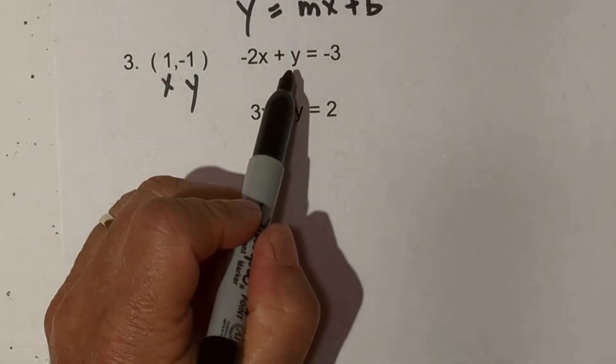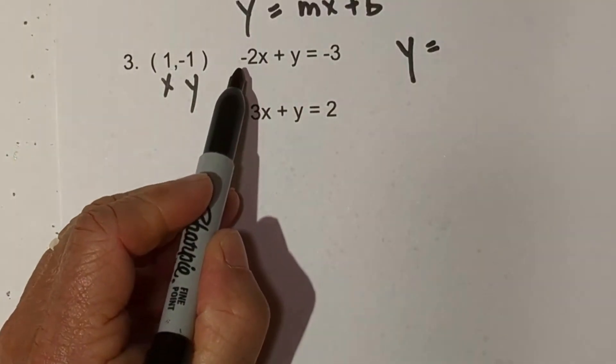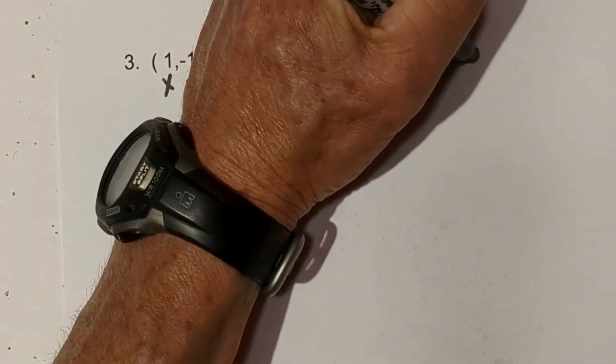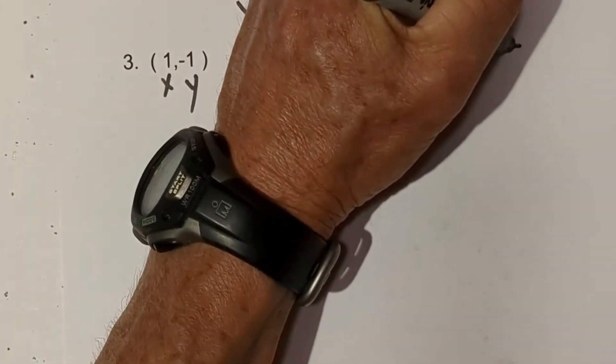Let's get started with that. First we need to get the y isolated. In order to get the y isolated, we will do an opposite operation plus 2x. So it will be y = 2x - 3.